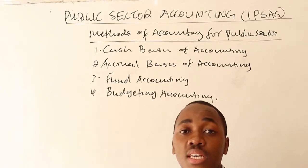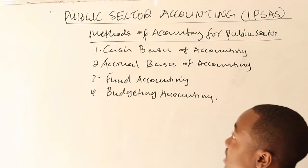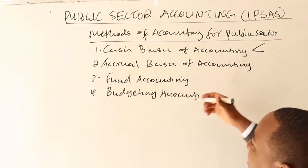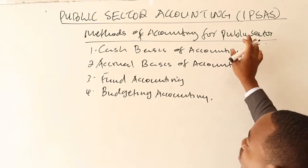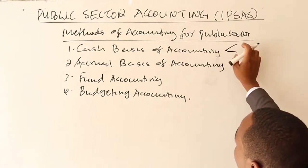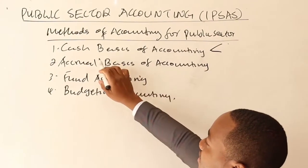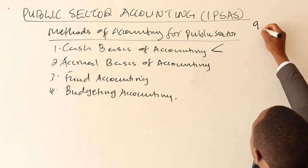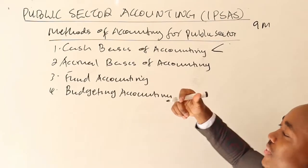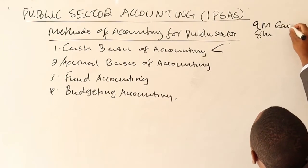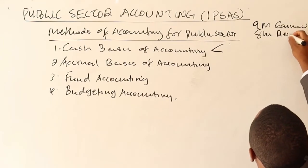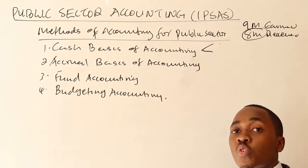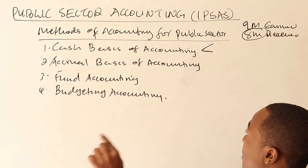The first method is the cash basis of accounting, and that is mostly applied by the national government. Under cash basis, what they pay or what they incur is what they record — regardless of accrual, regardless of the amount they earned. For example, if you earned nine million but only received eight million, under cash basis you record the eight million received, not what you earned.